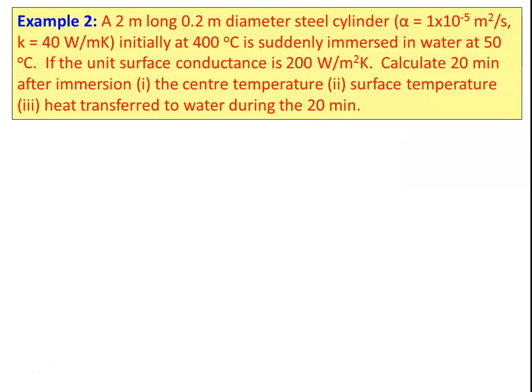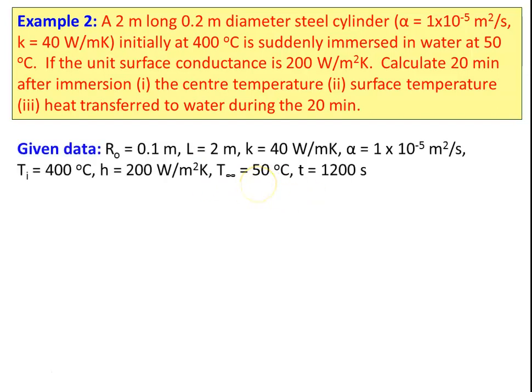Numerical example 2: A 2 m long, 0.2 m diameter steel cylinder with α = 1 × 10⁻⁵ m²/s and K = 40 W/m·K, initially at 400°C, is suddenly immersed in water at 50°C. The heat transfer coefficient is 200 W/m²·K. Calculate after 20 minutes: (1) center temperature, (2) surface temperature, and (3) heat transfer to the water. Given: R₀ = 0.1 m, L = 2 m, K = 40 W/m·K, α = 1 × 10⁻⁵ m²/s, Tᵢ = 400°C, H = 200 W/m²·K, T∞ = 50°C, t = 1200 s.